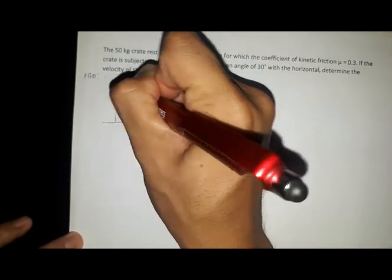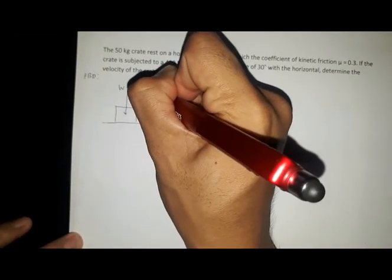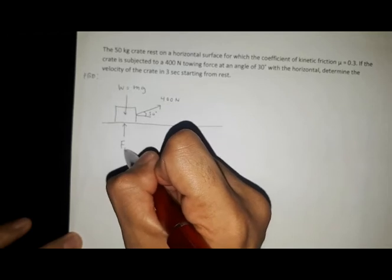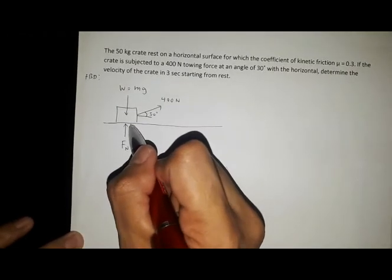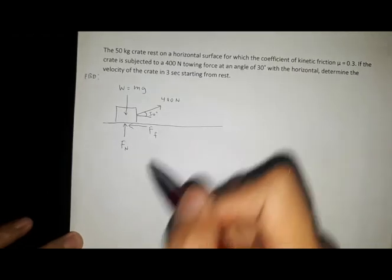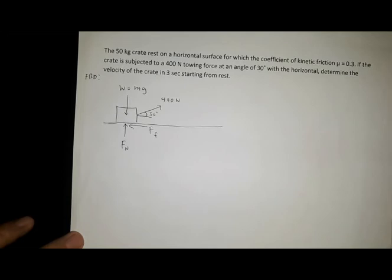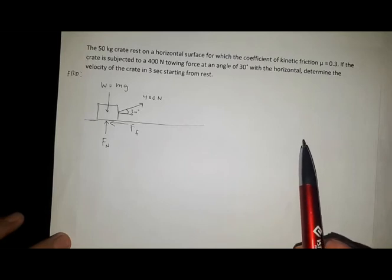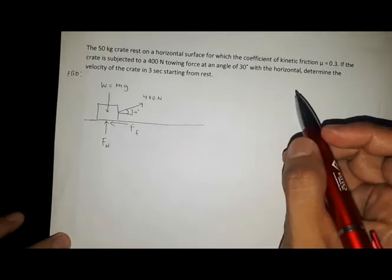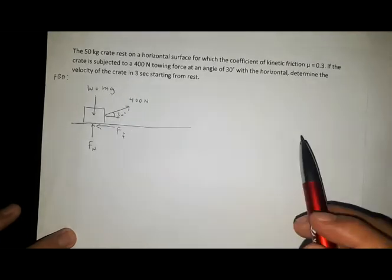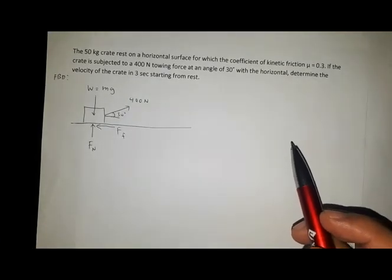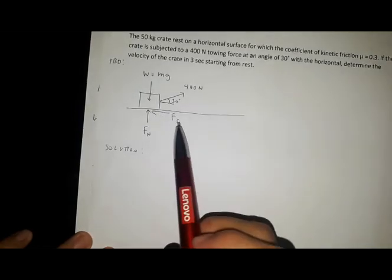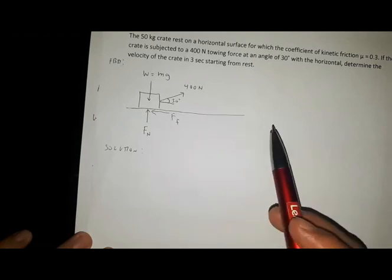Let's draw the figure and the free body diagram. We have a crate with a mass of 50 kilograms, towed by a 400-newton force at an angle of 30 degrees, with the coefficient of kinetic friction equal to 0.3. The weight acts downward equal to mass times gravity, the normal force acts upward on the opposite side, and the frictional force acts opposite to the direction of motion.